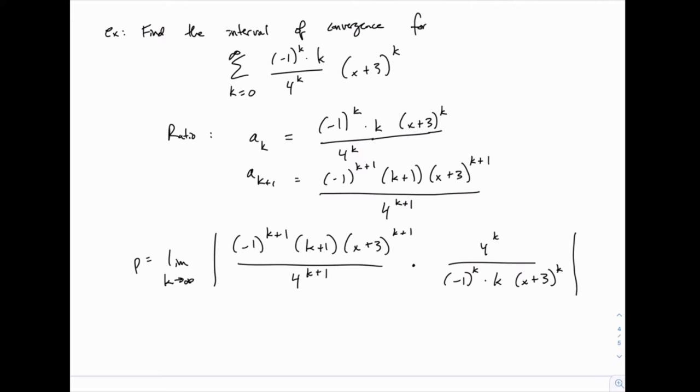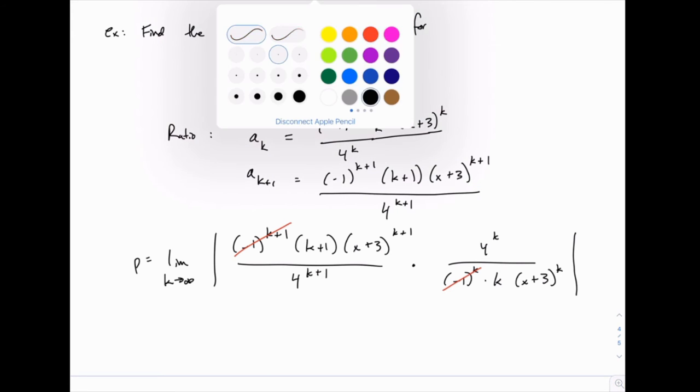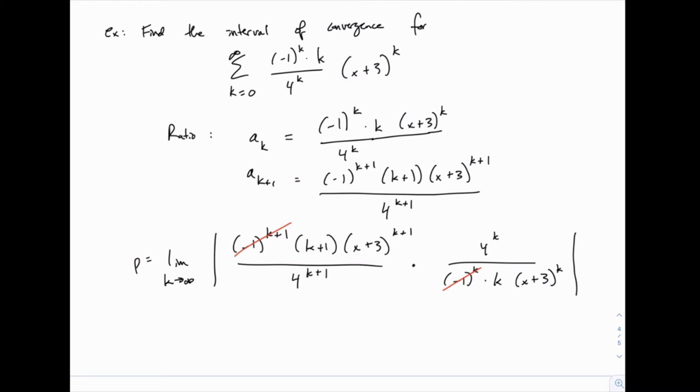So we have this big long fraction here, but notice that a lot of things are going to cancel. First of all, we have the negative 1's in both fractions. So you can start canceling these, but we can actually shortcut that, because when we're done we'll have a negative 1 left somewhere. However, these absolute values will do away with the negative 1, so it turns out that those just disappear completely after both canceling and applying the absolute value. So we can kind of drop those off altogether.